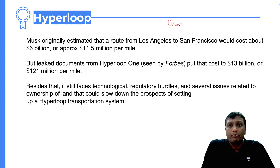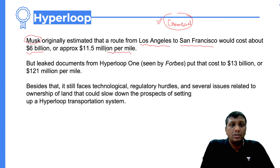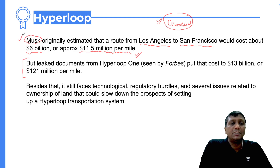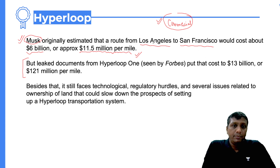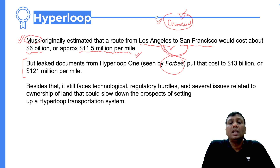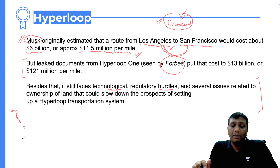The first commercial hyperloop was planned to run between Los Angeles and San Francisco. The total cost was projected at around 6 billion US dollars, with a per-mile cost of approximately 11.5 million US dollars. However, documents later revealed that the funding Musk projected increased many times over. There were significant hurdles including land acquisition difficulties and technology challenges, and the project remains incomplete with no confirmed completion date.